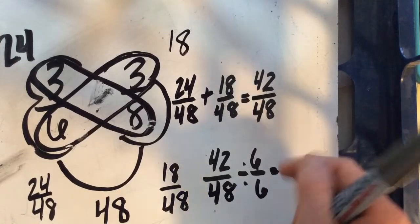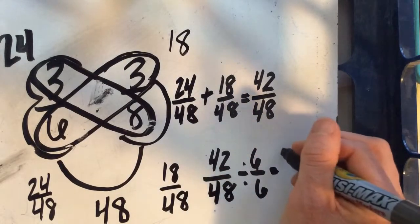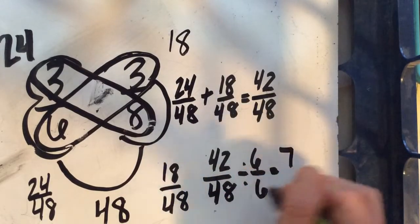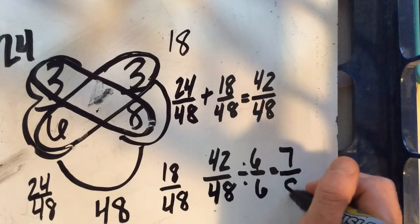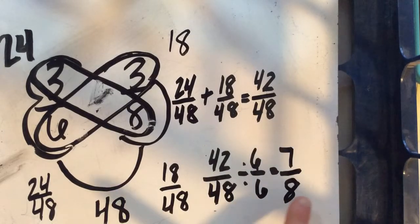And let's see if that's true. 42 divided by six is 7. 48 divided by six is 8. And I cannot simplify that any further.